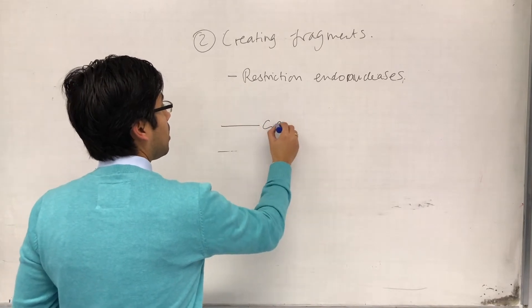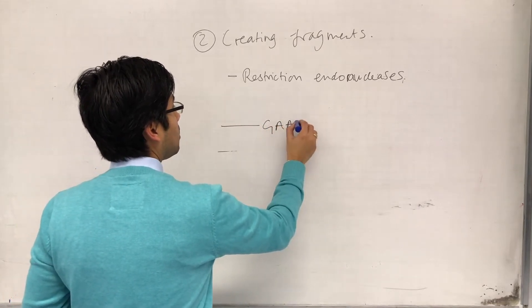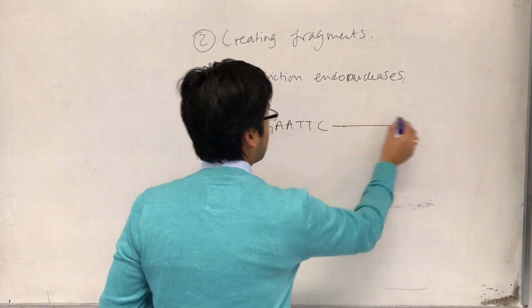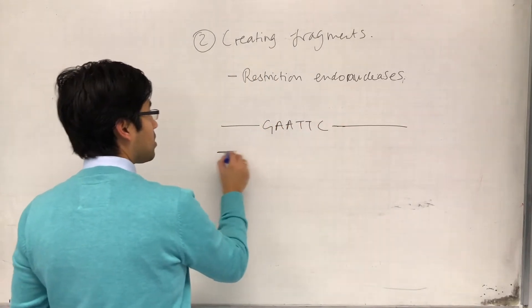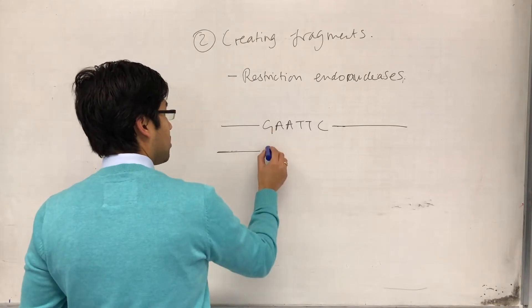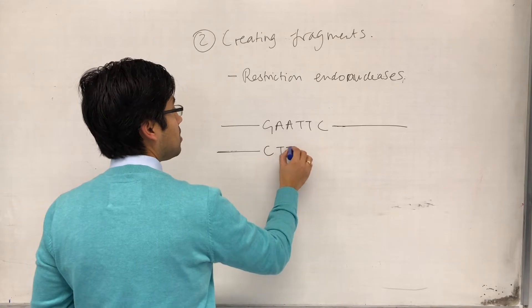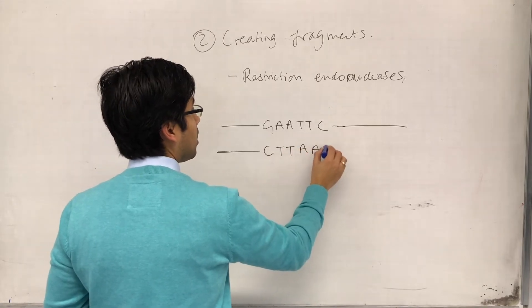G, A, A, T, T, C. This DNA strand carries on in that direction, and we've got another strand here. Its complementary sequence would be C, T, T, A, A, G.